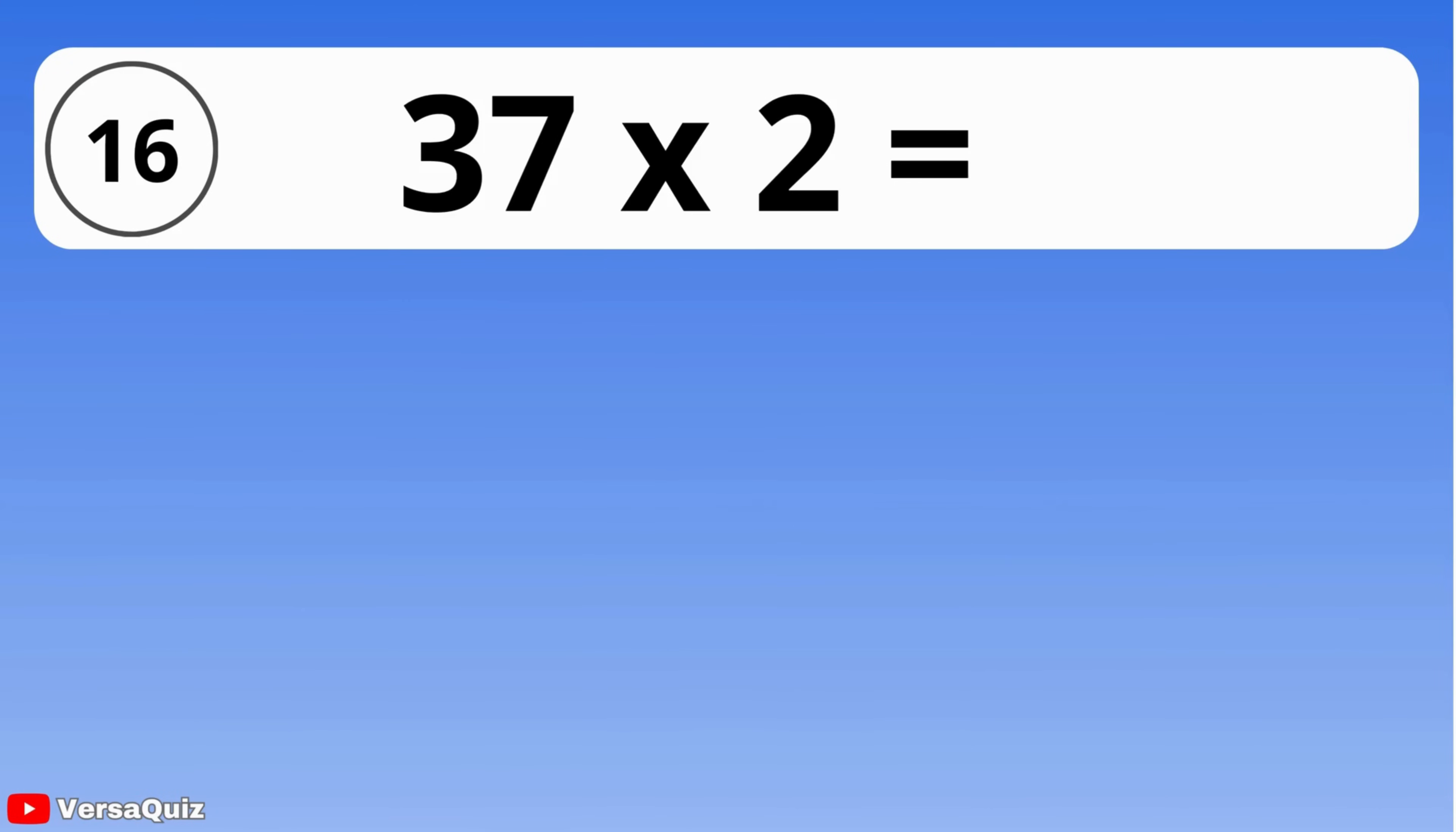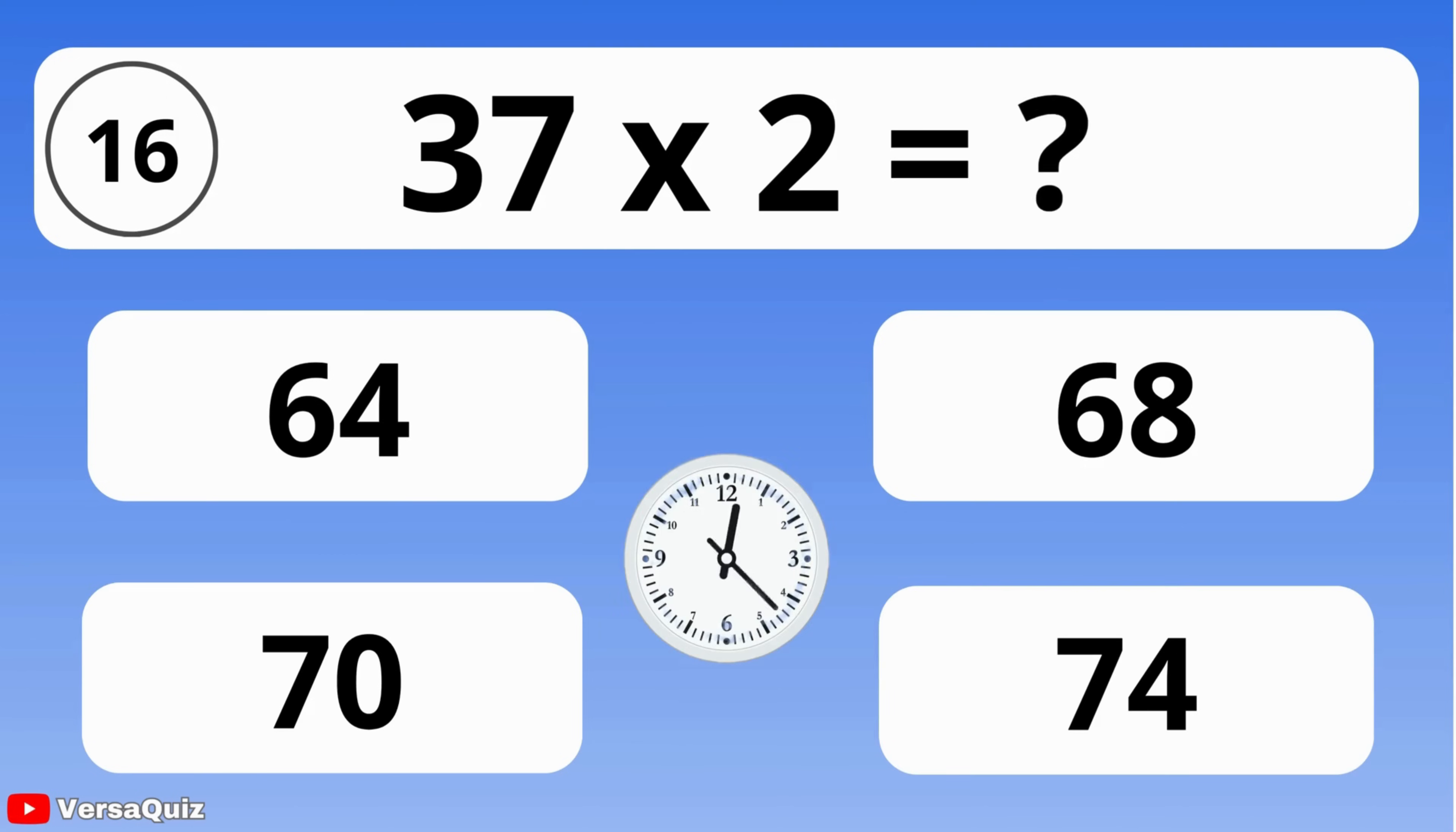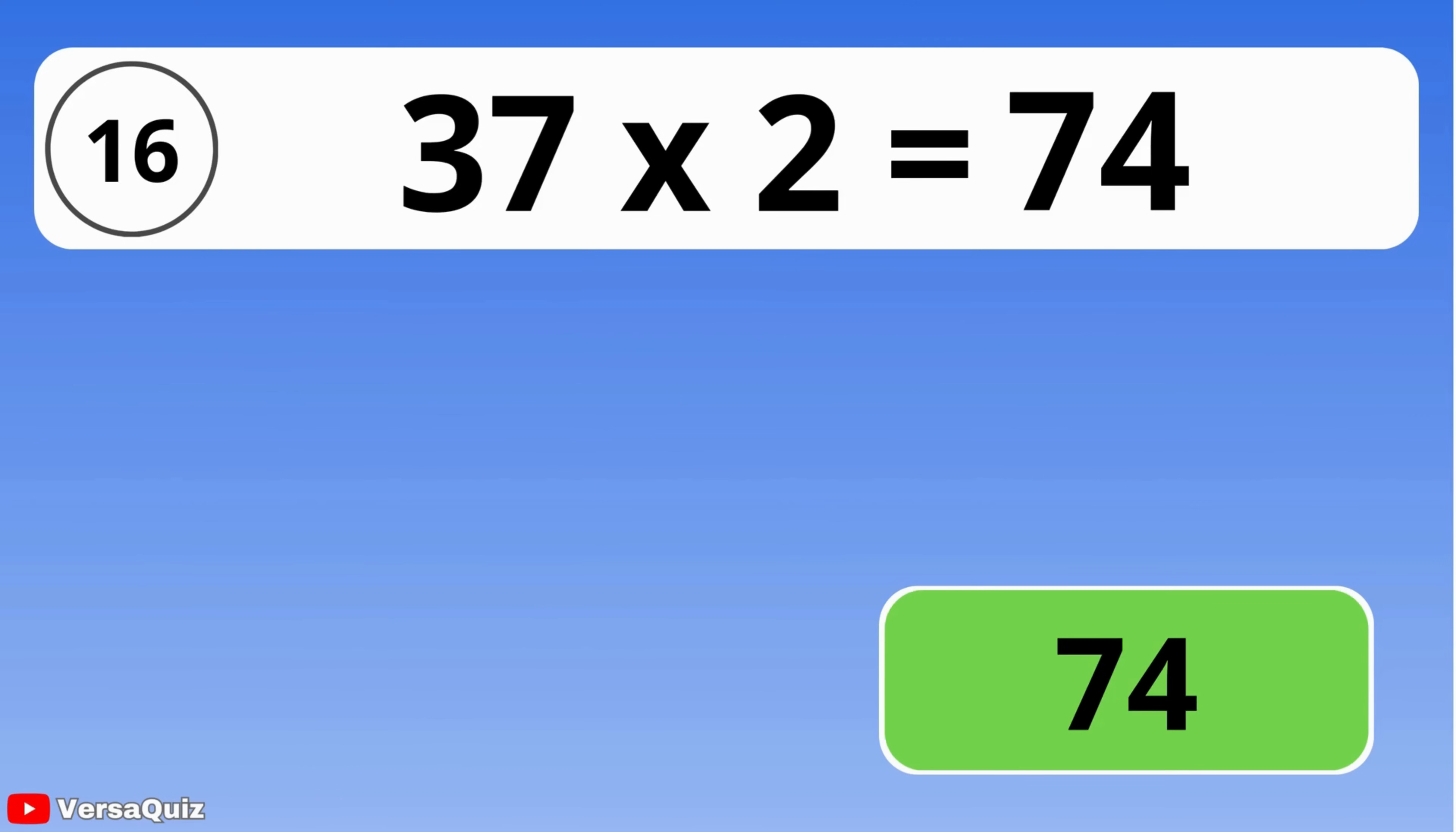If you have 37 and you multiply it by 2, what do you get? 64, 68, 70, or 74? If you take 37 and multiply it by 2, the answer is 74.